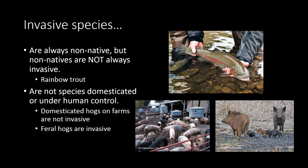Rainbow trout, for example, are not native to North Carolina, but they're also not invasive — they don't out-compete all native species. Domestic animals won't be considered invasive. An interesting example of this is feral hogs. Feral hogs out in the wild are invasive: they out-compete other species, create a ton of damage, and have very high reproductive rates. But if they're domesticated and kept on a farm, those animals are not considered invasive because they're under human control.